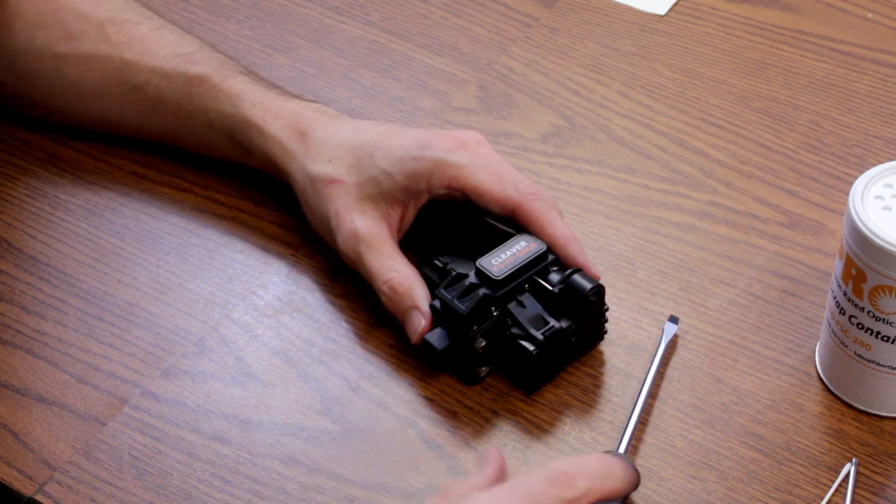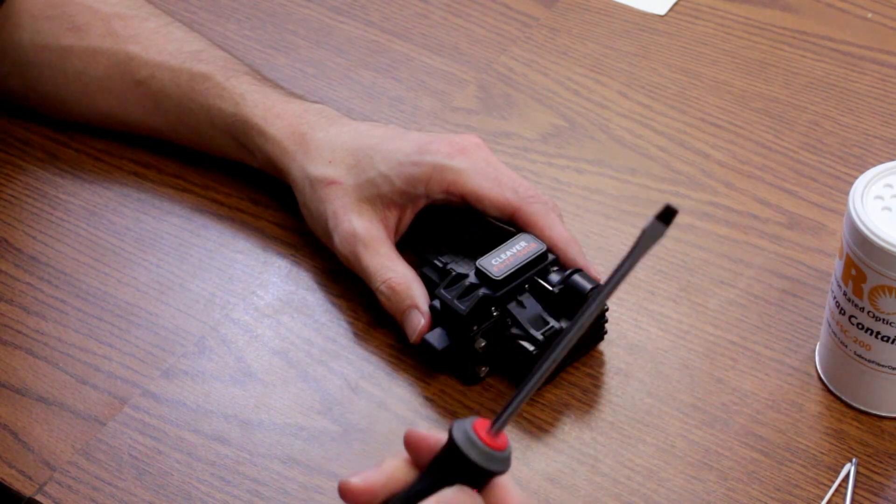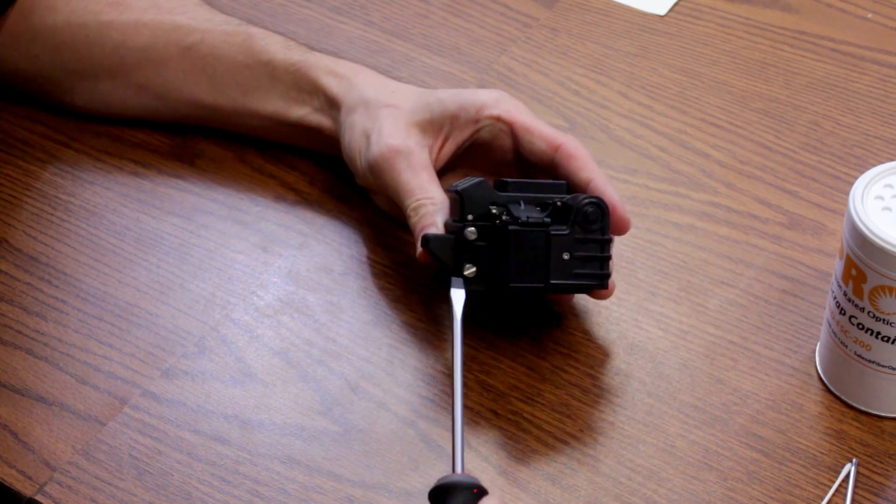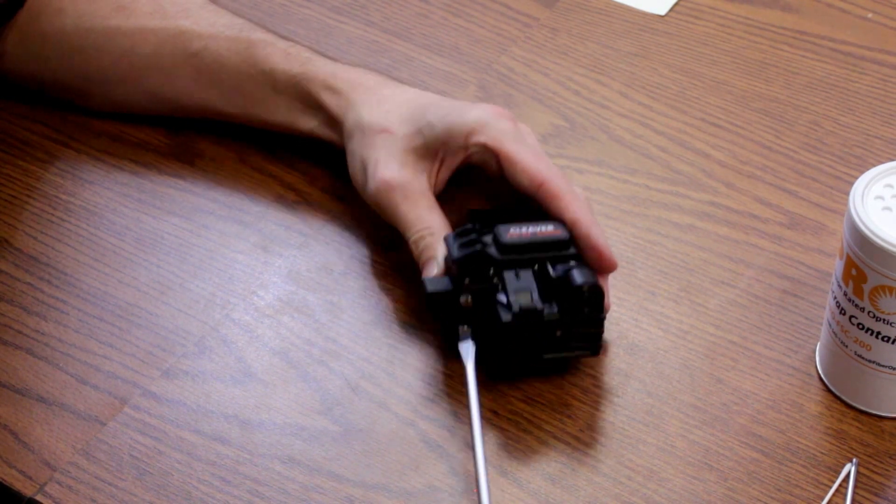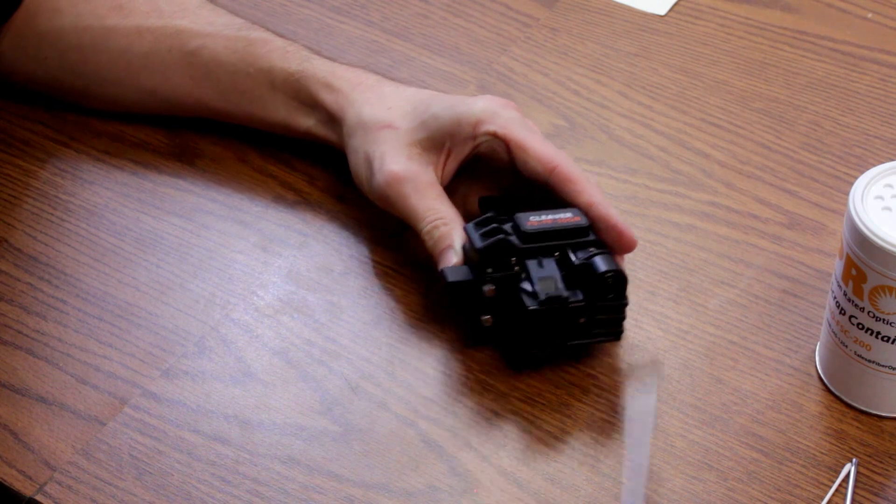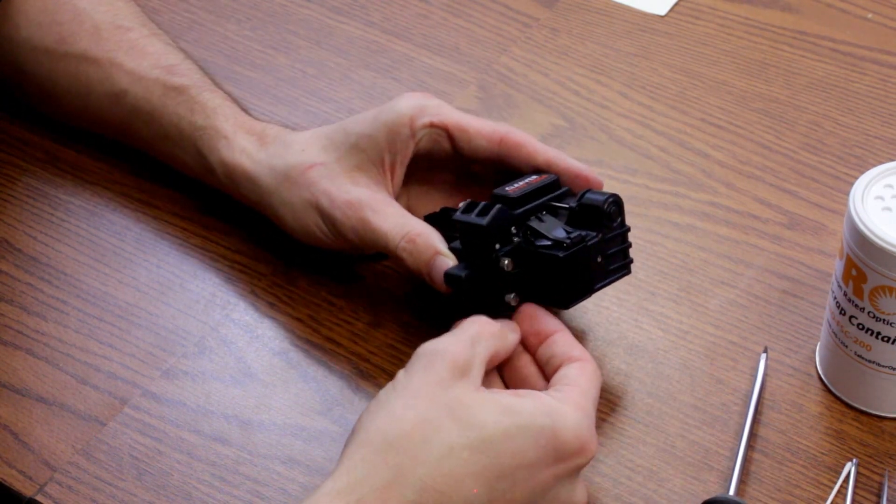So the way you're going to do that is you take any old regular flathead screwdriver and on the side here are two screws. So you're going to loosen them with the screwdriver and then simply unscrew them.